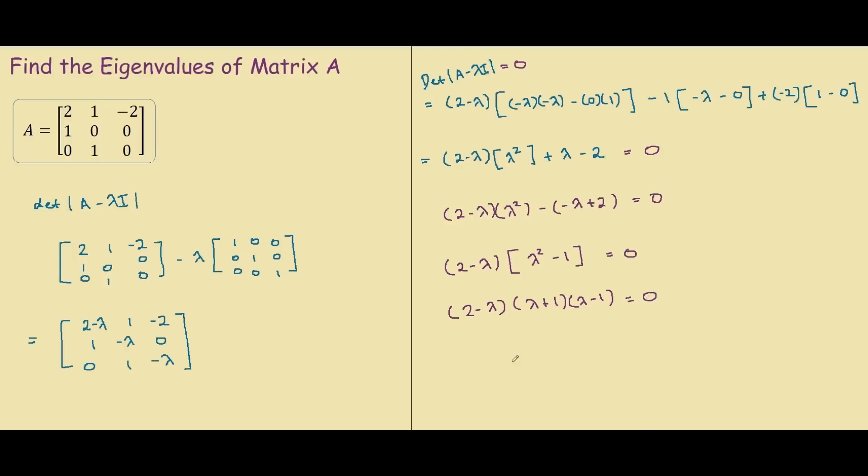And from this equation, you can see that our eigenvalues, basically what lambda equals to is 2, negative 1, and 1.